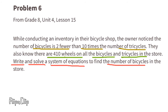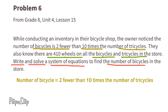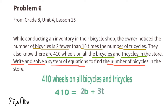Problem number 6 from 8th grade Unit 4, Lesson 15: while conducting an inventory in their bicycle shop, the owner noticed the number of bicycles is 2 fewer than 10 times the number of tricycles, and there are 410 wheels total. Using B for bicycles and T for tricycles: B equals 10T minus 2, and 410 equals 2B plus 3T.